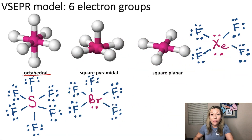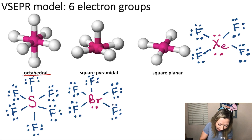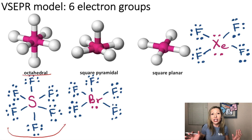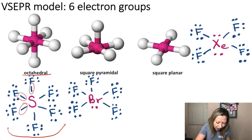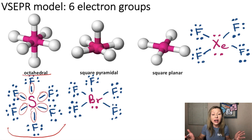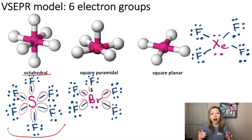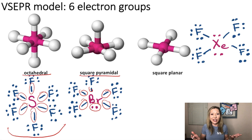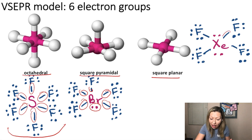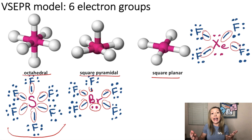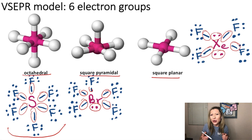For examples: sulfur hexafluoride has six electron groups around the central atom and no lone pairs, giving it an octahedral structure. Bromine pentafluoride has five bonds and one lone electron pair, giving it a square pyramidal structure. And xenon tetrafluoride has four bonding electron groups and two lone pairs, giving it a square planar structure. Make some marshmallow structures and see you in the next video.